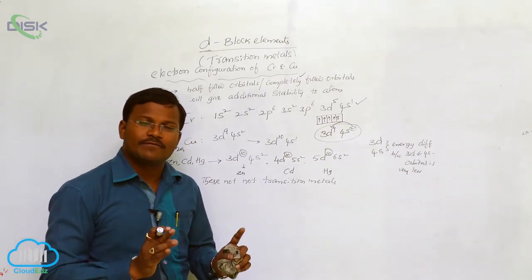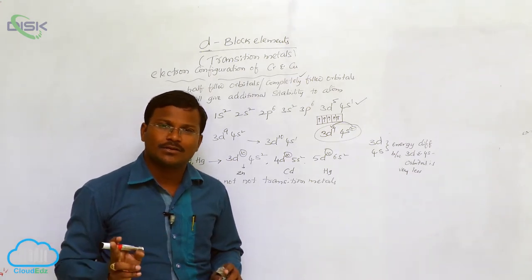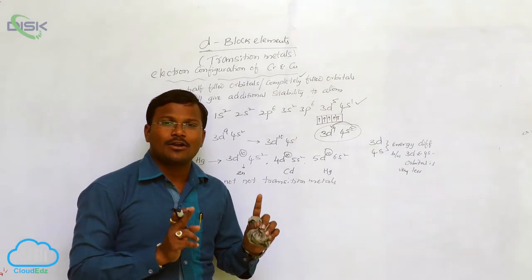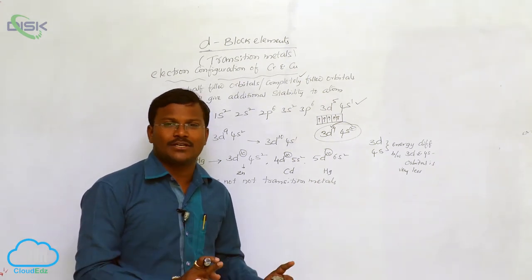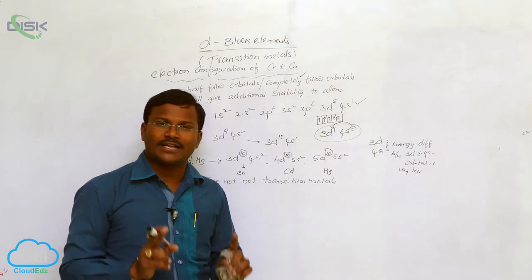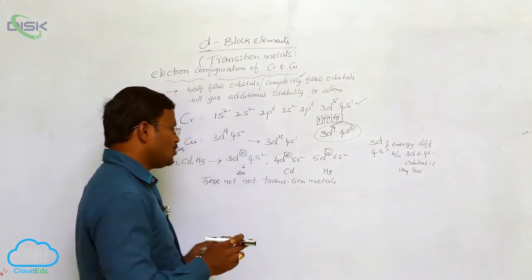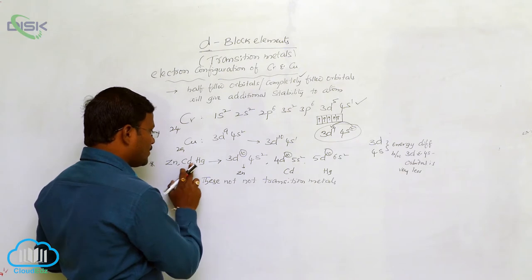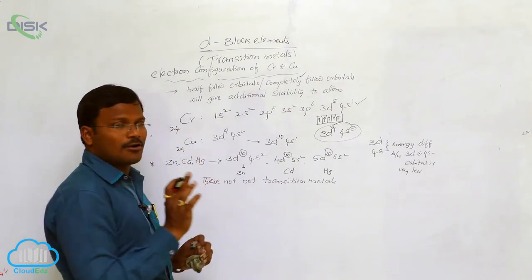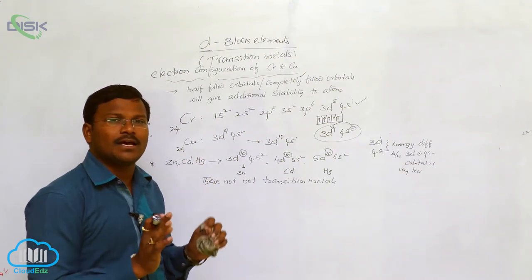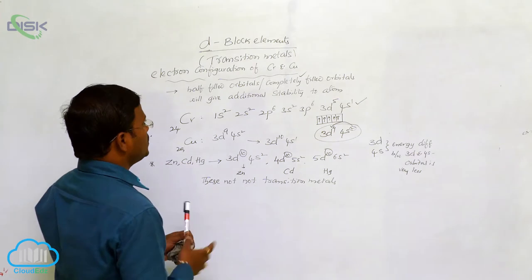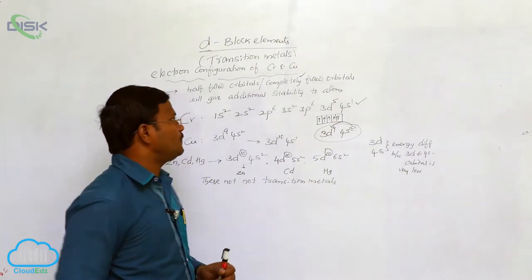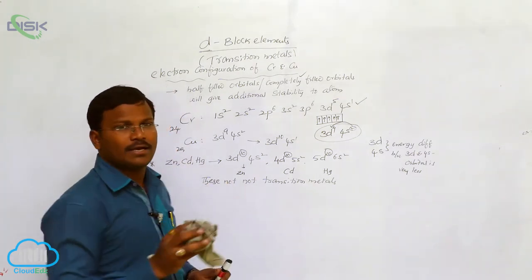So, what is the difference between d-block elements and transition elements? All d-block elements are not transition elements, but all transition elements are d-block elements. Due to completely filled d-orbitals, zinc, cadmium, and mercury are not transition elements, but they are d-block elements. This is about the electron configuration of d-block elements.